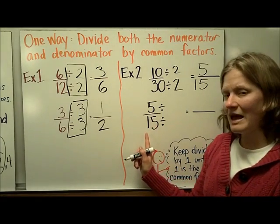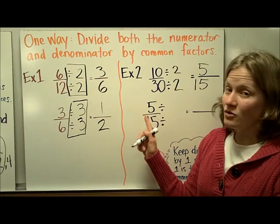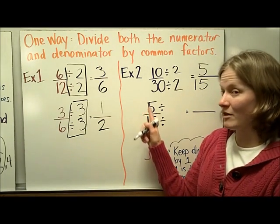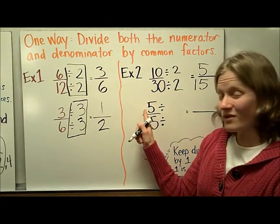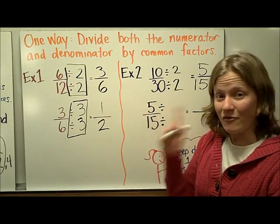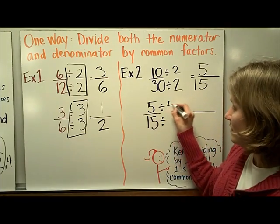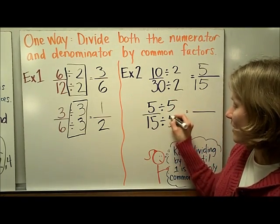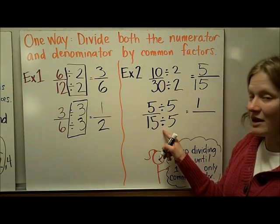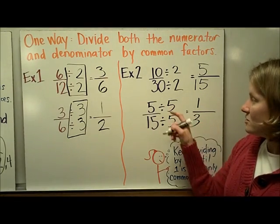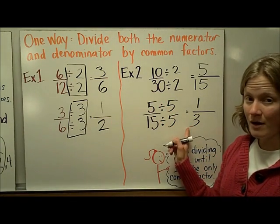Then I have to think: do they have any more common factors? Well, they're not even, so 2 isn't a factor. 3 is not a factor of 5, and 4 is not a factor of 5. But both of these numbers are divisible by 5, so I'm going to divide the numerator and the denominator by 5. 5 divided by 5 is 1, and 15 divided by 5 is 3. So 10 thirtieths in simplest form is 1 third.